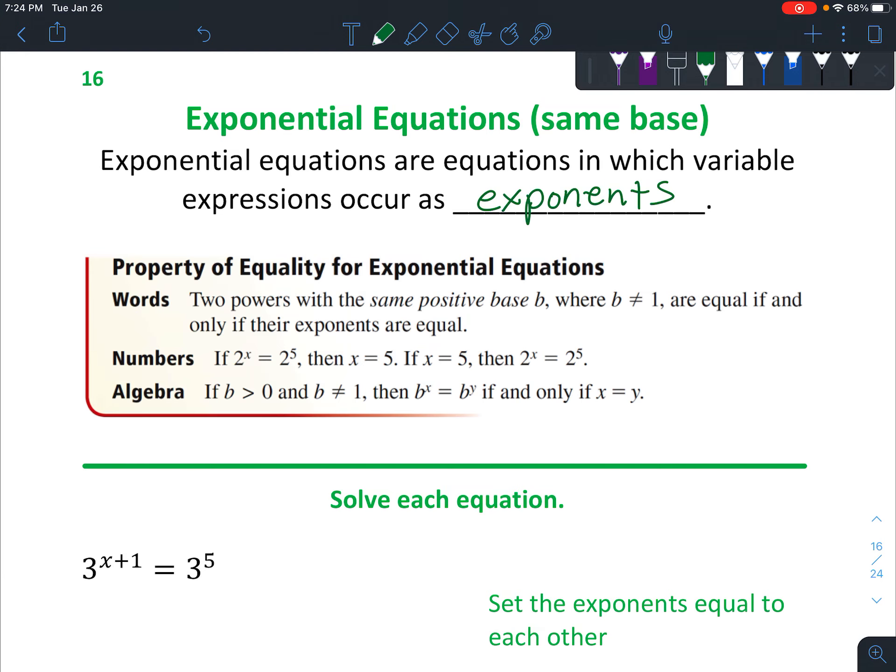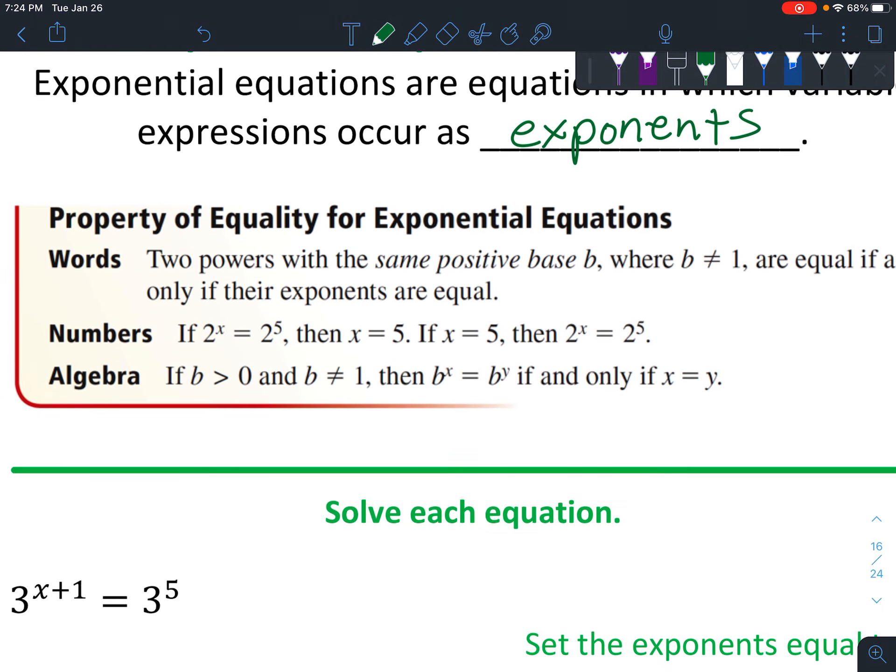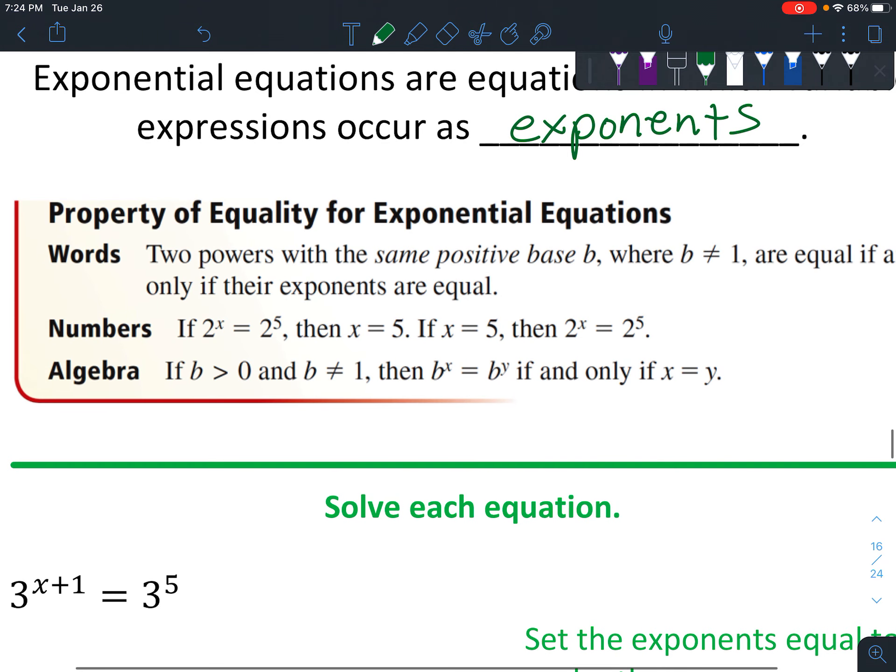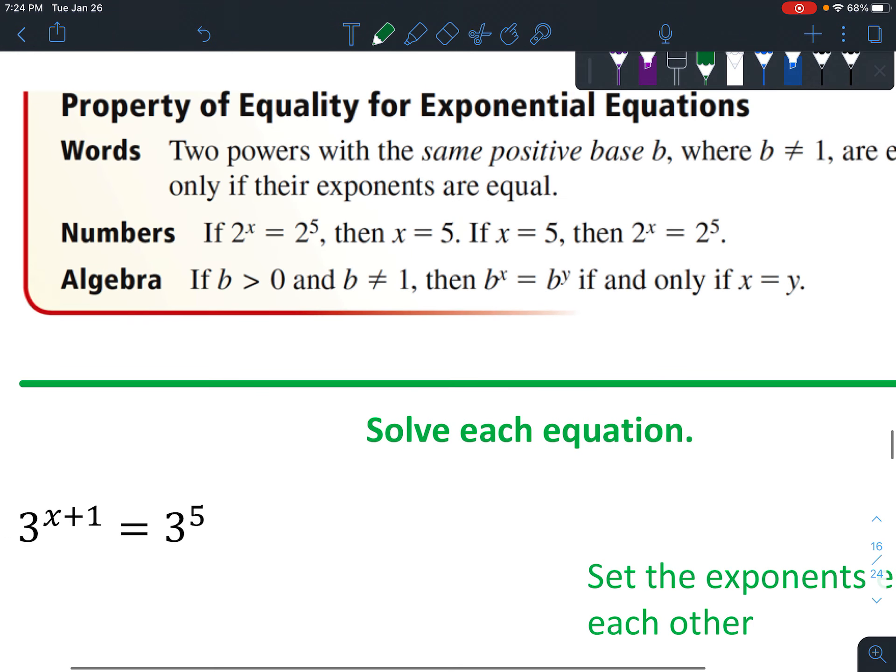There's this thing called the property of equality, and it's a little bit confusing in words, but basically in a nutshell, if you have something like 2^x = 2^5...